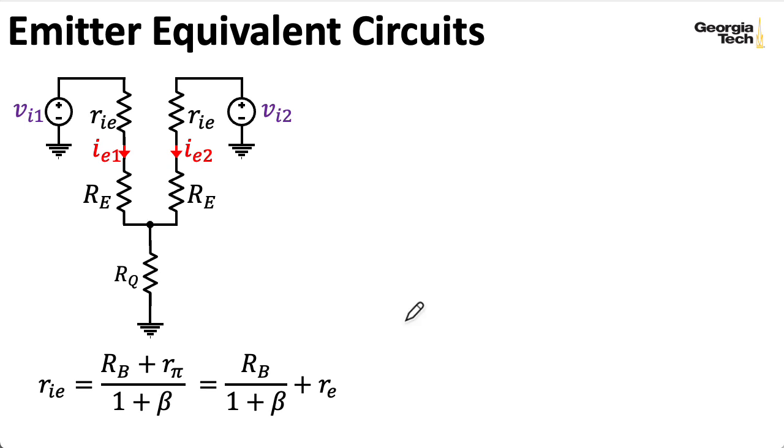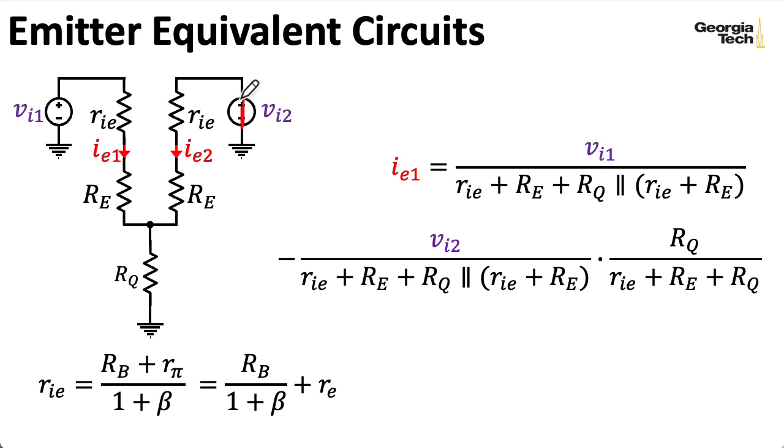Let's suppose that we zero out Vi2 to focus on the effect of Vi1. Well, if I want to know what IE1 is, that's just this voltage going across a resistance to ground. What's that resistance?